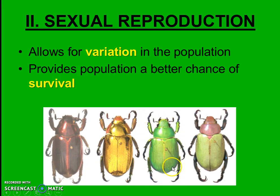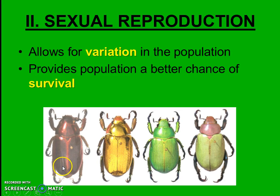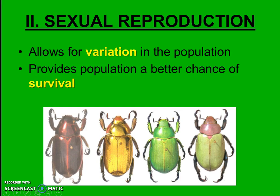For example, let's say the environment changes for these beetles and the background is all green. The green beetle will be able to hide best from predators because it'll be camouflaged. But if the greenery dies off due to a drought and the background becomes more brown, the brown beetle will have the bigger advantage of being camouflaged while the green one will stand out like a sore thumb. Having differences in the population allows the whole population to be more likely to survive in the long run. We will learn more about how variation is important throughout the rest of the year.